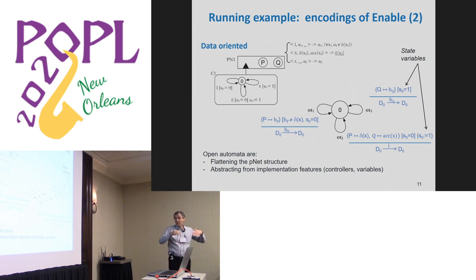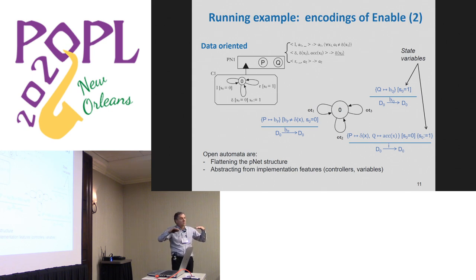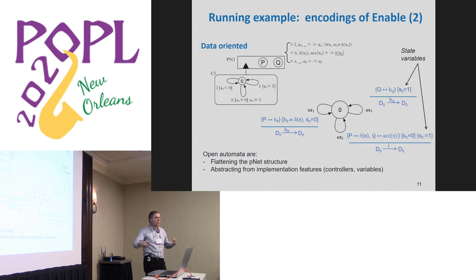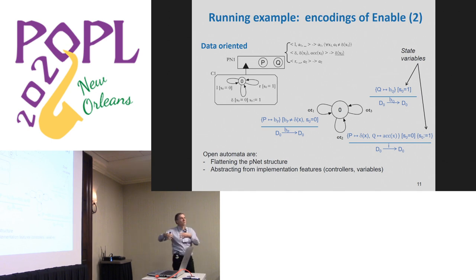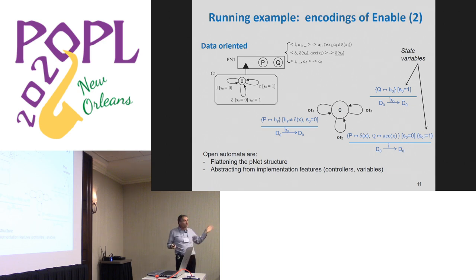Open automata flatten the structure of the PNET and abstract from implementation features — the controllers and variables are not represented. So you can prove that a specification is equivalent to some implementation with a very different structure. That's the main goal. We can also do model checking.